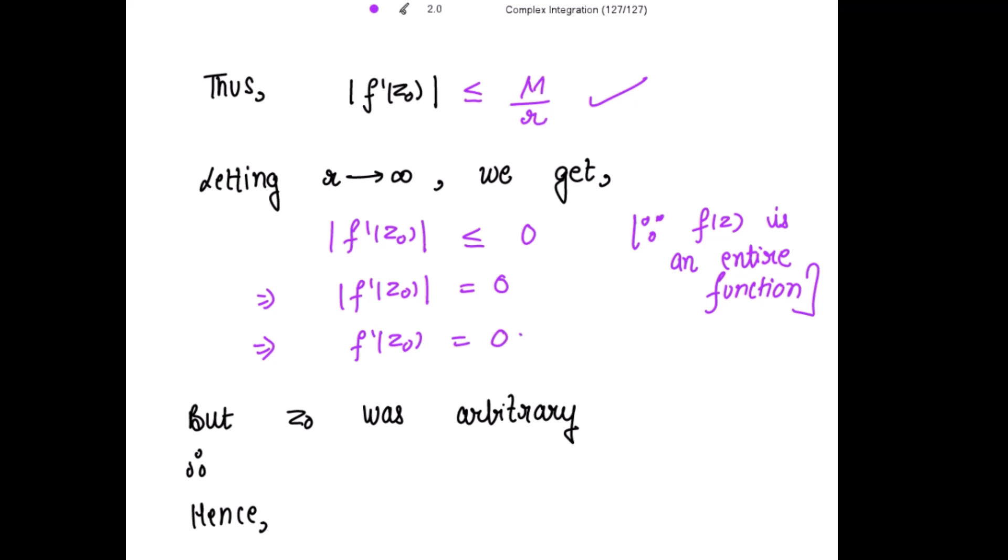But z_0 was arbitrary. z_0 can be any point. So this result is true for all z. So therefore f'(z_0) is equal to 0 for all z belonging to the complex numbers.